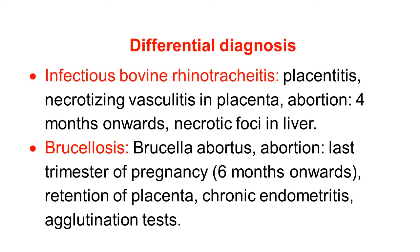Another important disease is brucellosis, caused by Brucella abortus. Abortion occurs in the last trimester of pregnancy, six months onward, and is characterized by retention of placenta and chronic endometritis. It can be diagnosed by agglutination test.